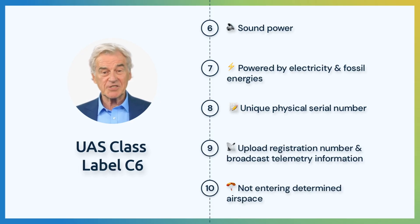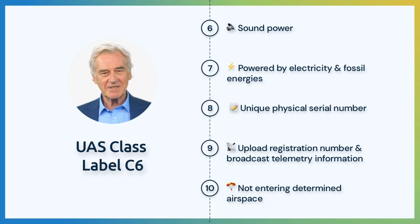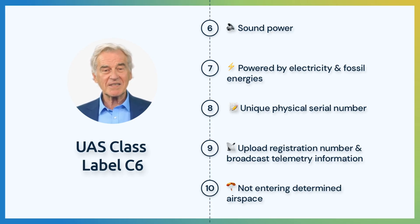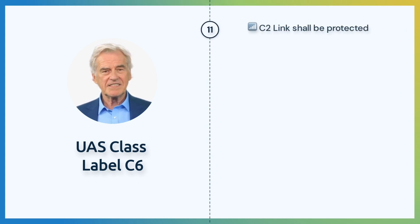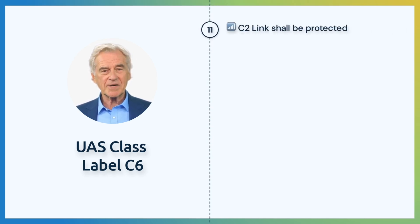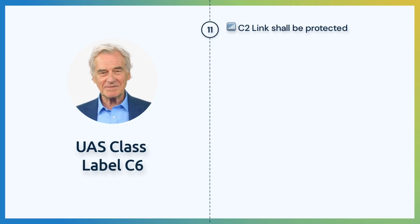This airspace limit shall be imposed smoothly without adversely affecting the flight operation. Additionally, the UA shall notify the pilot through warnings. The C-2 link from the pilot to the UA shall be protected from unwanted third parties. When the battery reaches a certain level, the pilot shall be warned by the UA.